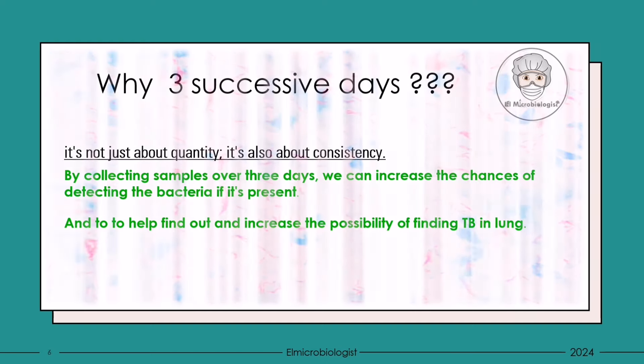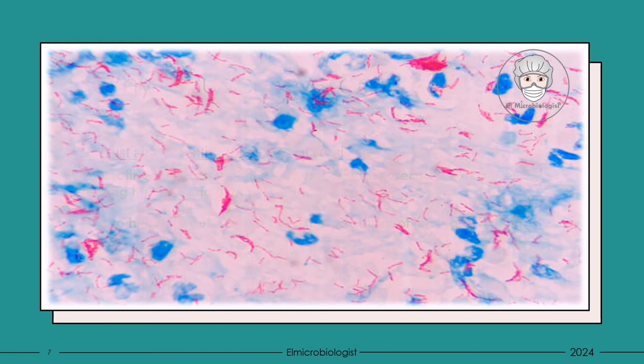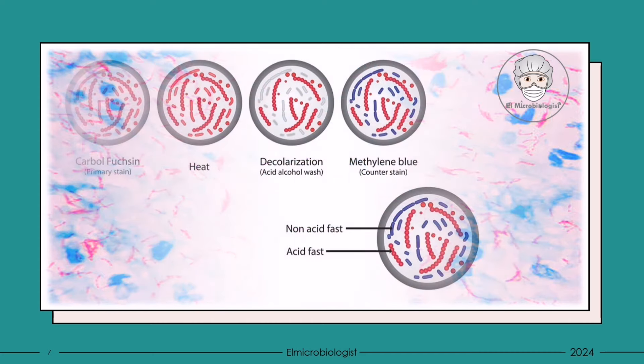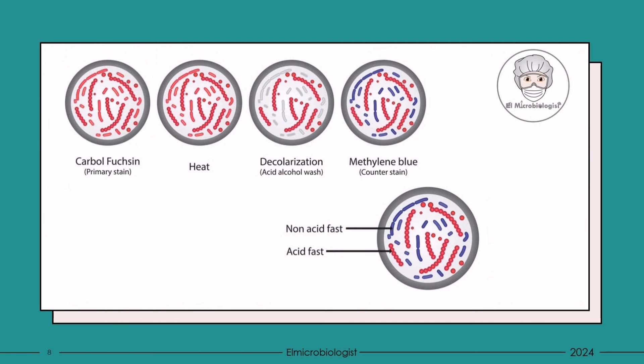Once we have our samples, we move on to the microscopic examination. Here, the sputum is smeared on a slide and subjected to a special stain known as the acid-fast stain. This staining technique is specifically designed to highlight Mycobacterium tuberculosis.